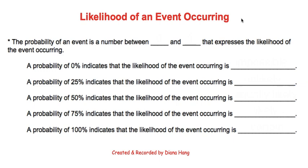In this video tutorial, we're going to be discussing the likelihood of an event occurring. The probability of an event is a number between 0 and 1, and that is a decimal that you would convert into a percentage by multiplying by 100.